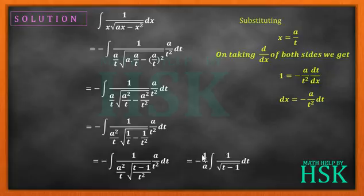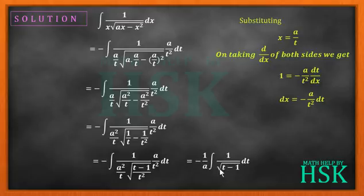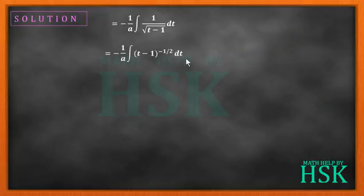After simplification, we get minus 1 upon a, into the integration of 1 upon square root of (t minus 1), dt. The integration has now become very simple — we just need to integrate (t minus 1) raised to the power of 1/2 in the denominator, which is the same as (t minus 1) to the power of minus 1/2.